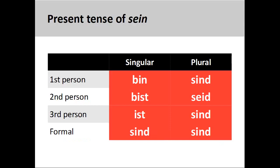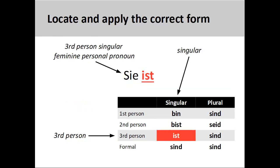Finally, the conjugation pattern for the strong verb sein, meaning 'to be,' is completely unpredictable and must be committed to memory. The sentence 'sie ist,' meaning 'she is,' shows the correct third person conjugation.